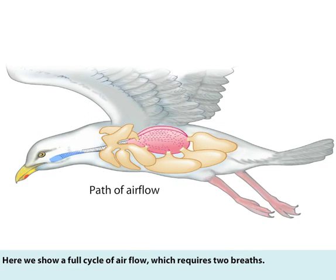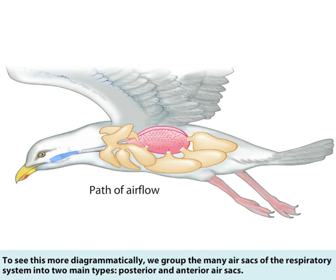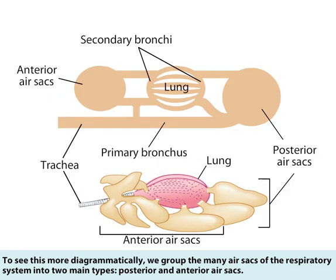Here, we show a full cycle of air flow, which requires two breaths. To see this more diagrammatically, we group the many air sacs of the respiratory system into two main types: posterior and anterior air sacs.